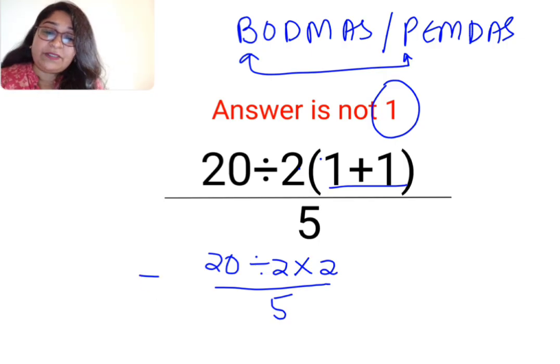But after this what they did was 20 divided by 2 multiplied by 2 is 4. So 20 divided by 4 is 5. 5 upon 5 the answer is 1.